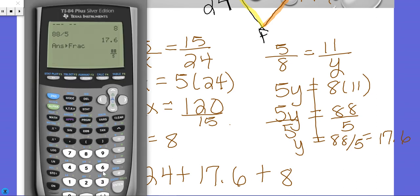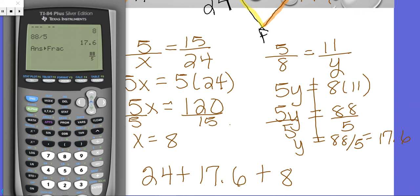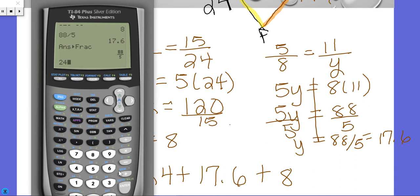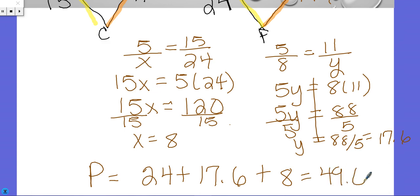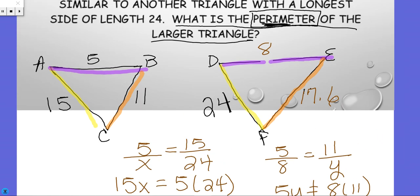We're going to add all those together. 24 plus 17.6 plus 8 equals 49.6. Let me see if there's any units. No, it didn't give us any units, and we're done.